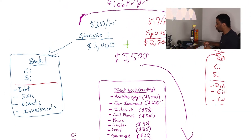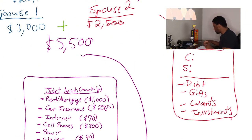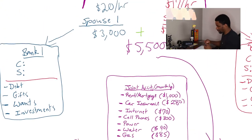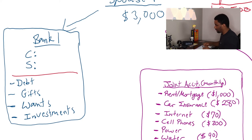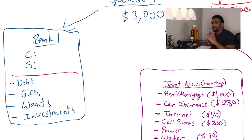So part two of this: Spouse number one has his bank account, spouse number two has her bank account or vice versa, whichever one. Now, their banks each have a checking and a savings account. Very important. Very important.